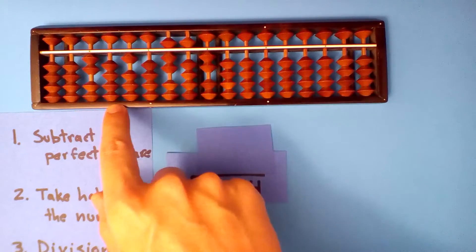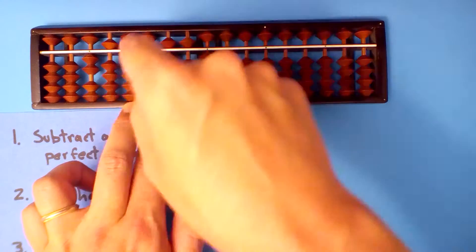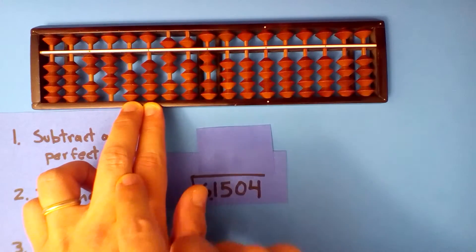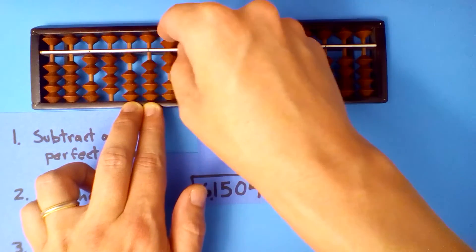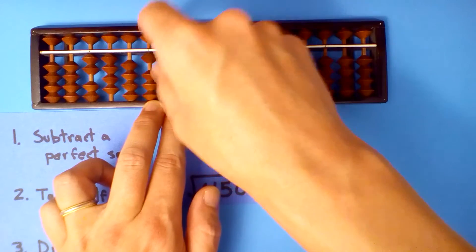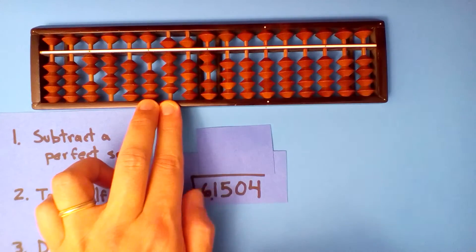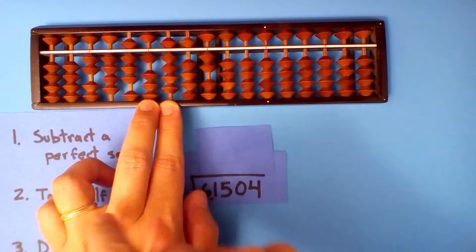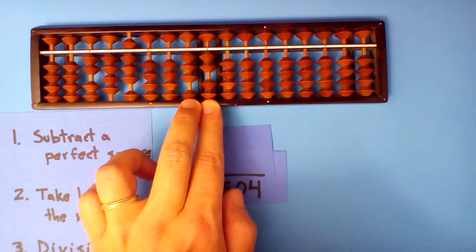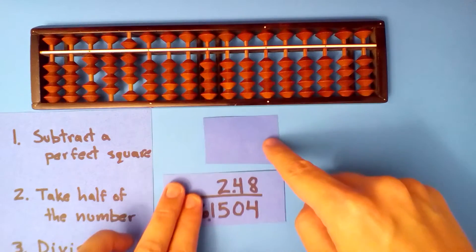Now we divide this number into this one. Two goes into ten five times, but 2.5 doesn't. So five is actually too much — let's try four. Yes, 2.4 does go into ten four times. So we multiply and subtract. Four times two is eight. Four times itself is sixteen, so we subtract half of that — eight. Next, 2.4 into nineteen: eight times. Eight times two is sixteen. Eight times four is thirty-two. Eight times itself is sixty-four, and half of that is thirty-two. Our root is 2.48.